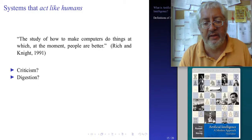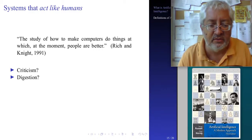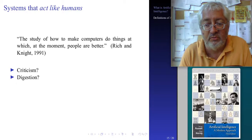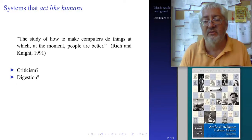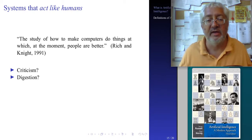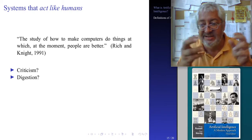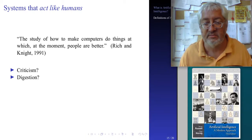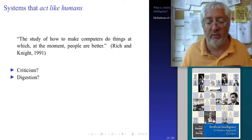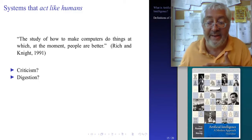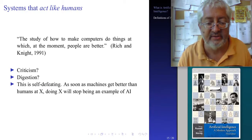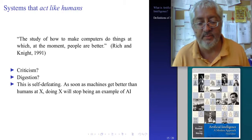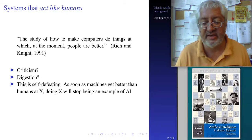The digestion example is the strongest criticism, or consider a smoking machine — a machine that sucks air through a cigarette more efficiently than a human. At the moment humans are good at smoking cigarettes; if I build a machine that smokes better than a human, is it therefore AI? Obviously not. Also, this definition has another problem: it is self-defeating. As soon as machines get better than humans at some activity X, doing X will stop being an example of AI.